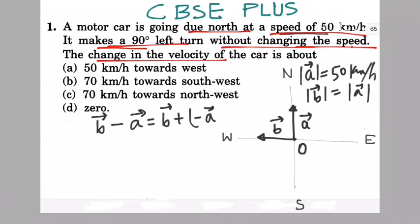First we have to find what is minus A. A is given, so minus A will be simply in opposite direction of the same magnitude. Just the direction changes - reverse the direction.